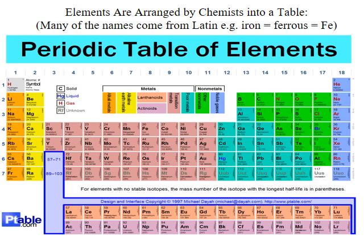Here's a picture of the periodic table of elements. The elements have been arranged by chemists in a very specific structure, and we'll talk about that in a minute. Just know that most of the names come from a Latin root. For instance, iron was originally called 'ferrous' in Latin — because of the reddish color iron gets when it oxidizes with oxygen. So the symbol for iron is Fe, right here on the periodic table. Sometimes it helps to have a bit of an understanding of Latin for some of the earlier and older elements.